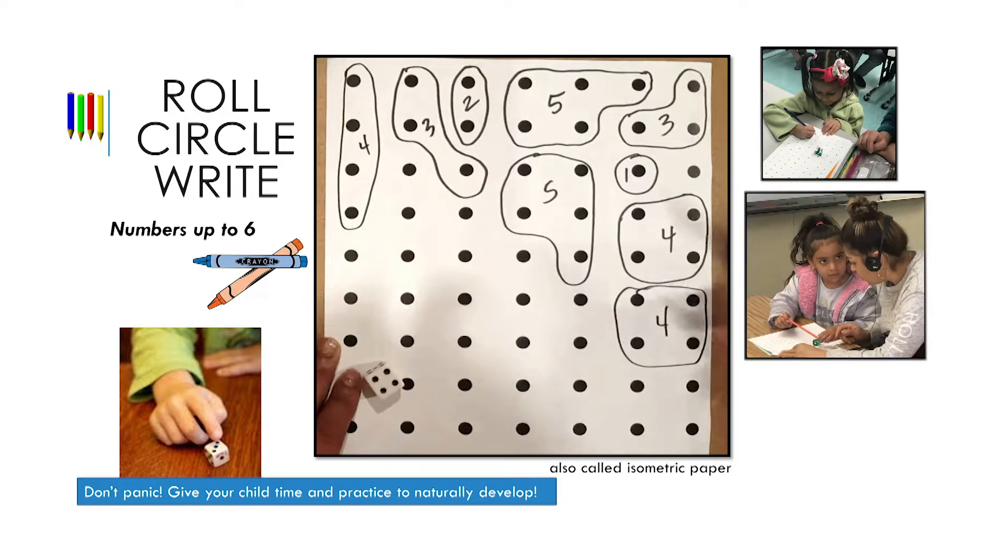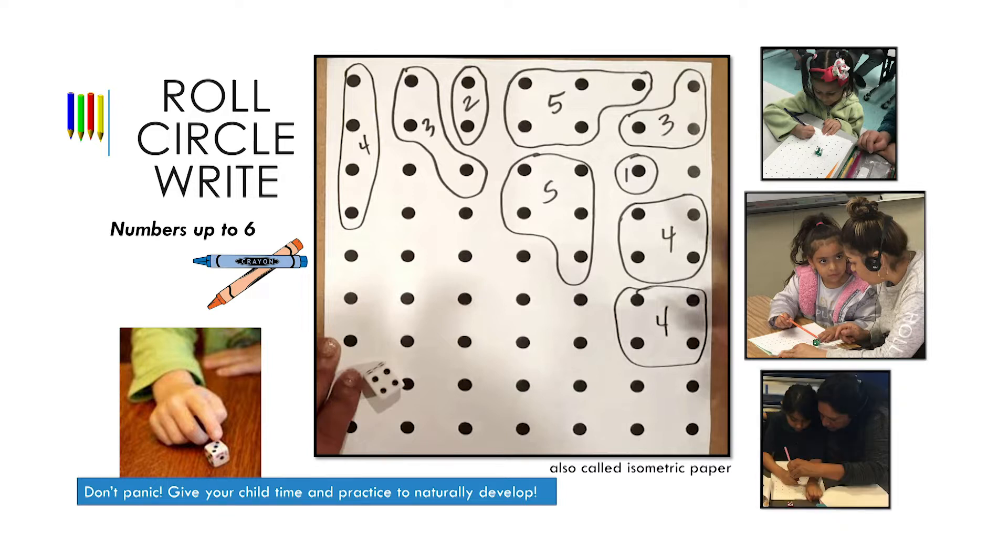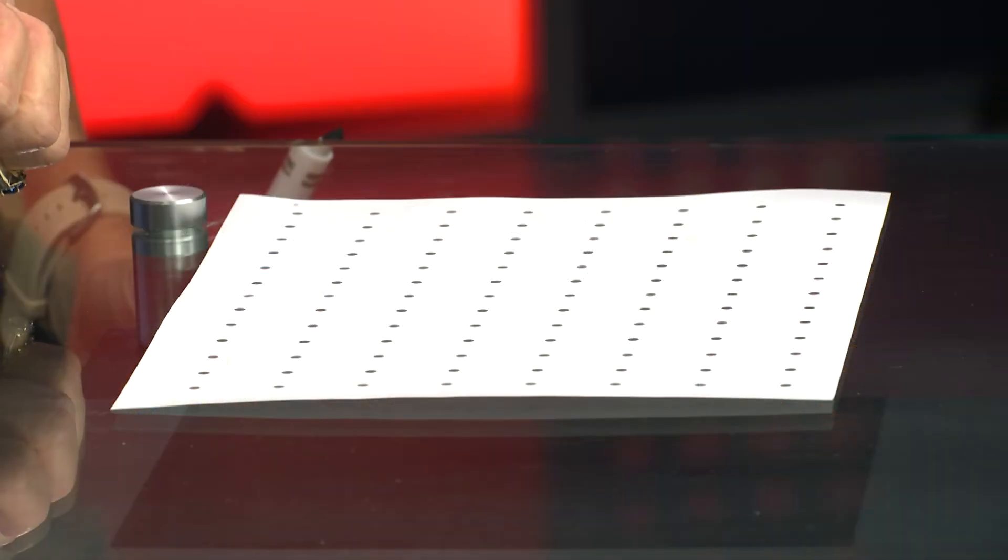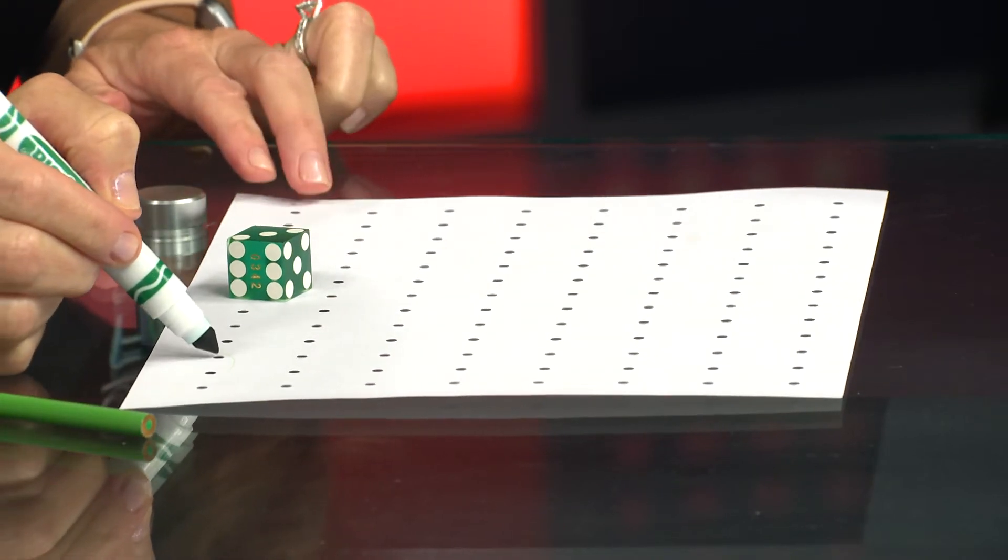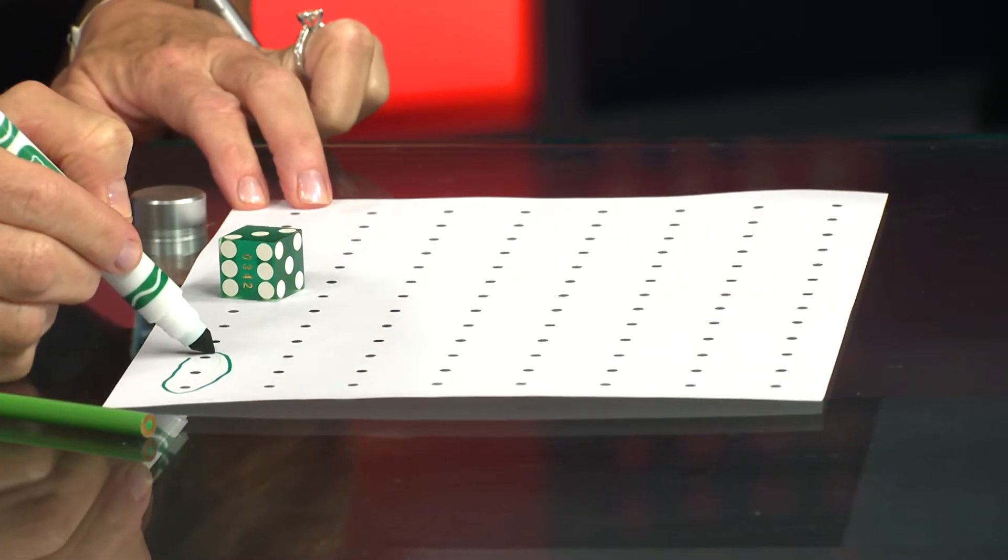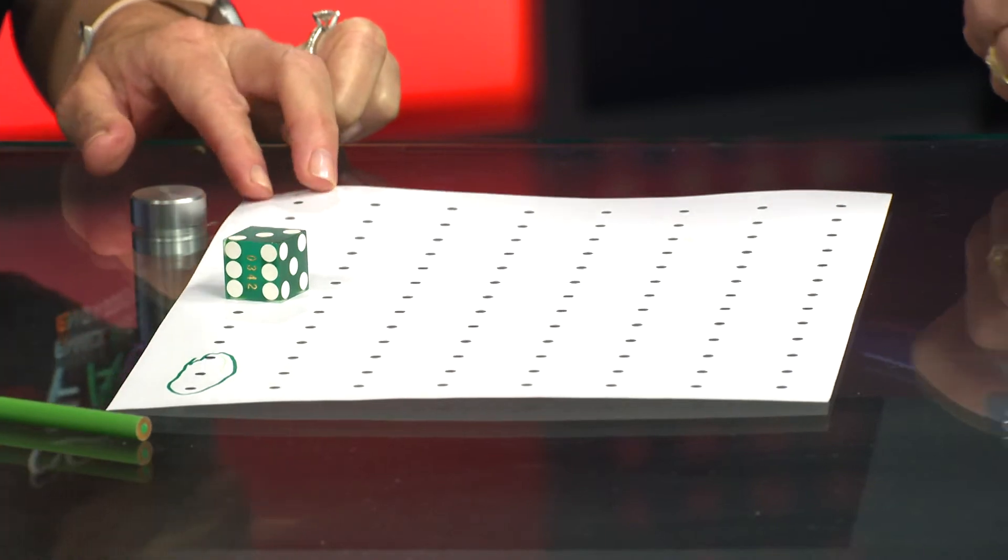This activity, Roll Circle Right, can be played with multiple players. Choose a different crayon or colored pencil color for each person playing. The right part of this game is the extension piece. Initially, just have your child roll and circle. Take turns rolling the die and circling the number of dots that match the number you rolled on the die.